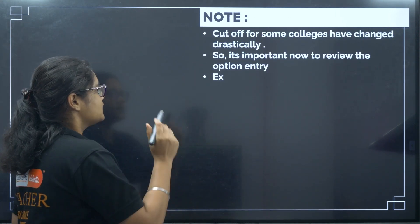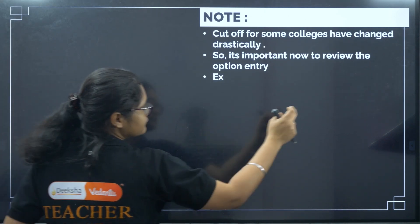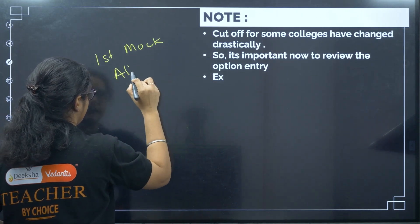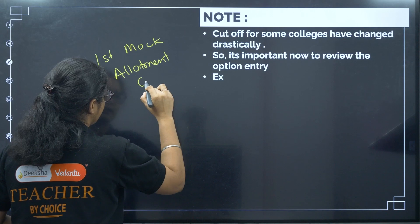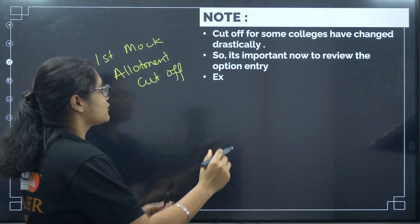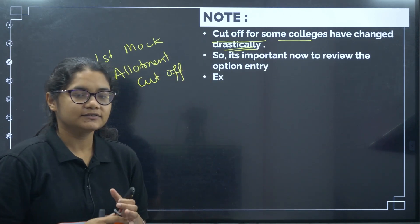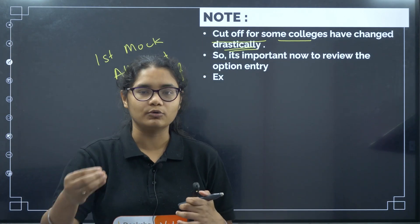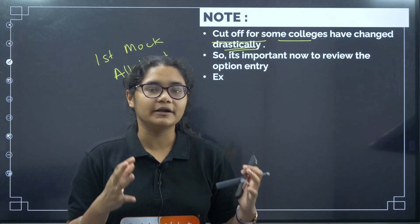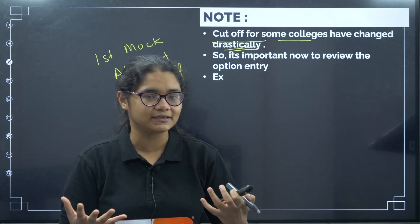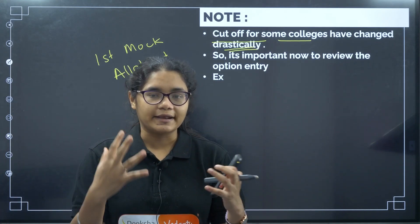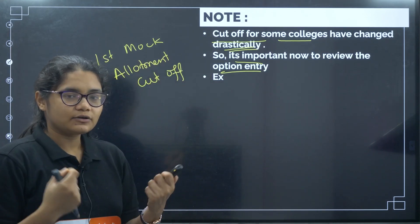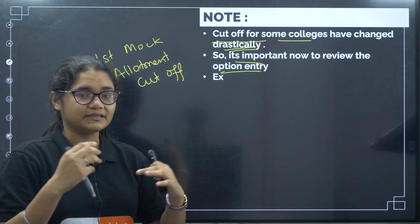Once we have seen the first mock allotment cutoff, we found certain things. The cutoff for some colleges has changed drastically. Whatever option entry you might have made before was likely based on the KCET 2023 round 2 extended cutoff. But now the cutoff for some colleges and branches has changed drastically, so it is correct to edit our option entry based on these mock allotment results.